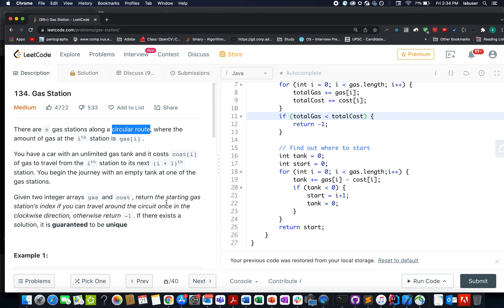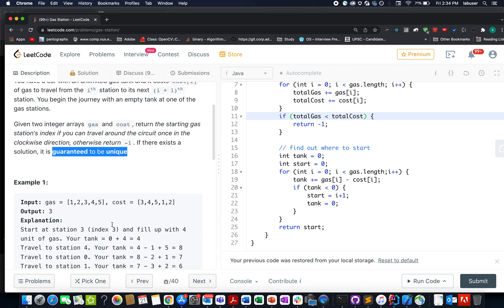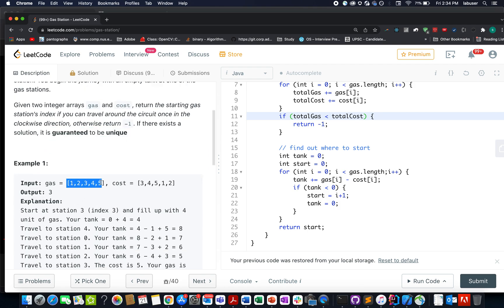We need to return the starting index from where you will begin your journey if it's possible. If it's not possible then we need to return minus one. Also there is an important attribute that is specified. It is guaranteed that there will be only one unique solution. That means out of the input array there will be only one possibility which will lead to the answer.